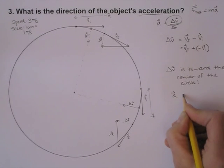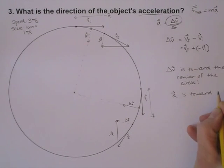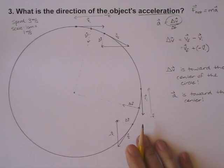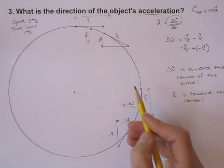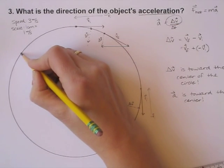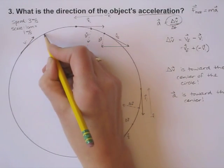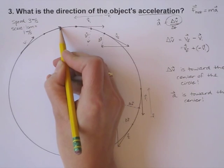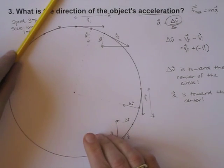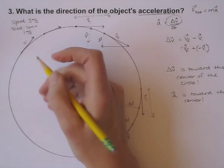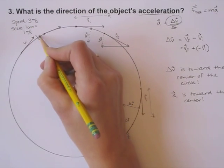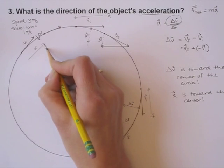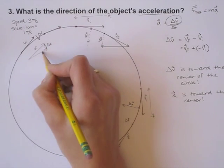The acceleration vector is toward the center. Let's think about why this makes sense. If you have an object moving along with some initial velocity, and later the velocity is in a different direction, think about what had to happen to change it. It had to have a delta-v pointing inward so that v-initial plus delta-v gives you the new velocity vector — confirming that the acceleration points toward the center of the circle.